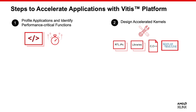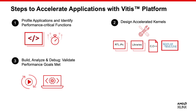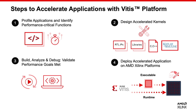To design accelerated kernels, you can use performance-optimized VITES libraries, design custom algorithms in C or C++, exchange your code in MATLAB Simulink, or reuse RTL IPs. Next, you will build accelerated kernels, analyze the performance, and debug any issues using the VITES core tools. This step is where you verify functional correctness and validate that performance goals are met. Finally, you want to build for deployment on hardware. The VITES compiler builds FPGA binaries for all Xilinx platforms by running synthesis and implementation.